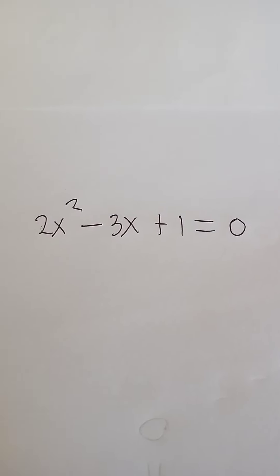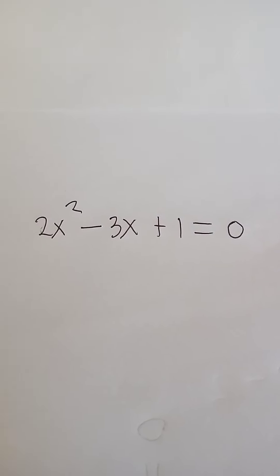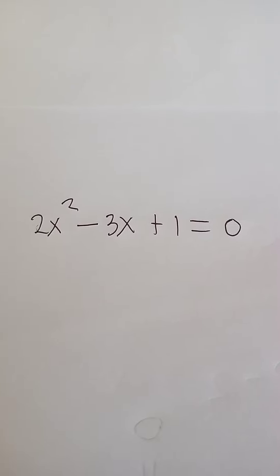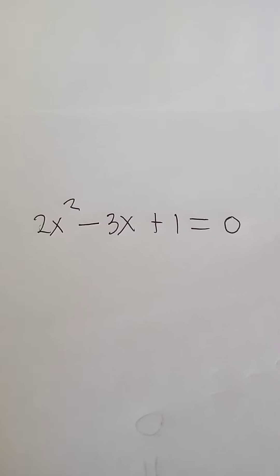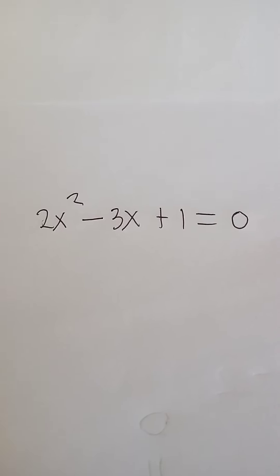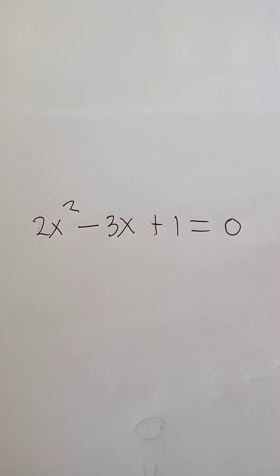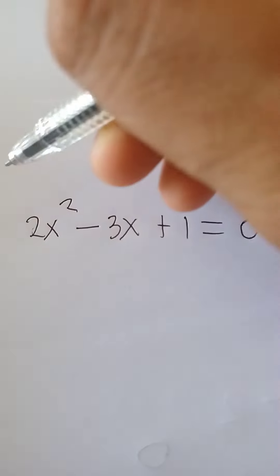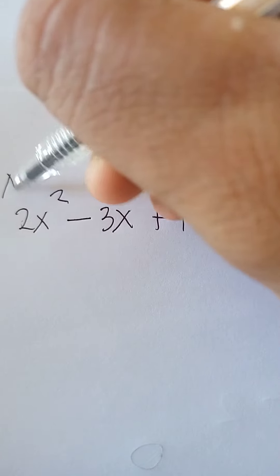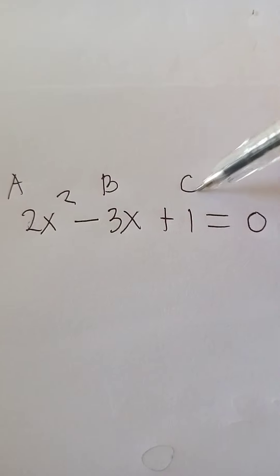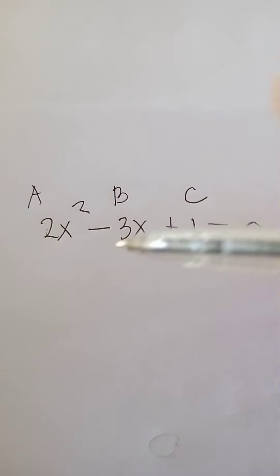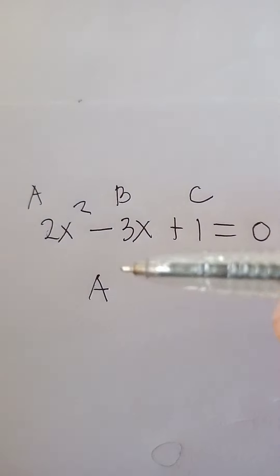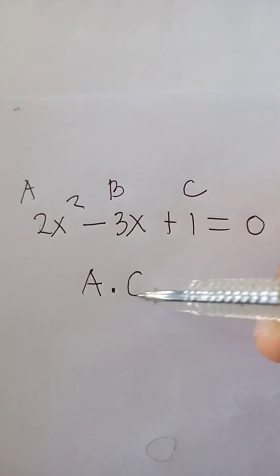Let us solve another quadratic equation by using factoring in a very easy way. For example, 2x squared minus 3x plus 1 equals 0. First, determine the values of A, B, and C. Then we are going to multiply the value of A times the value of C.